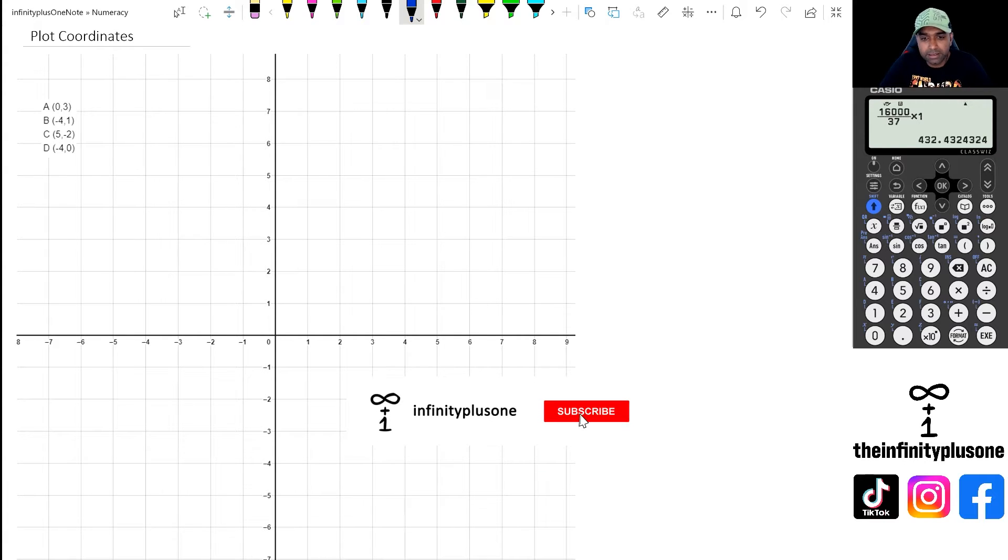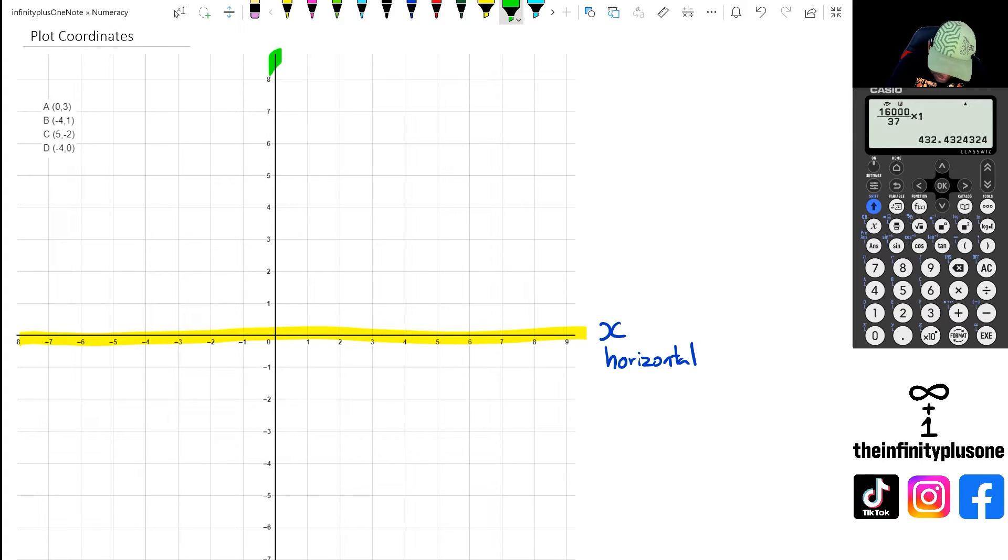All right, so getting started with a Cartesian plane, the first thing we need to know is that we've got two sets of lines. The first is this yellow line here. This yellow line is known as the x-axis, also known as the horizontal axis. And then we've got this green line here. That's going to be your y-axis and sometimes known as the vertical axis as well.